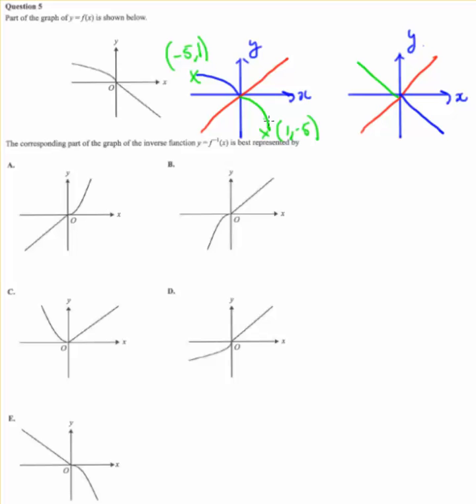So our final curve is going to have this piece here and this piece here. So we need to select the curve that matches those two green pictures put together. Well, the only one that looks remotely like that is E. So our answer must be E.